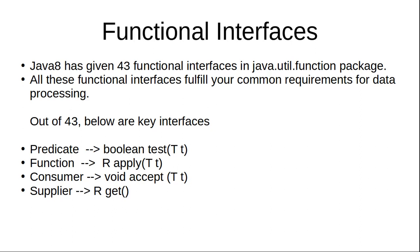Keeping all these requirements in mind, Java 8 came up with 43 predefined functional interfaces. With the help of these interfaces, along with streams and lambda expressions, you can fulfill all your day-to-day requirements. We will discuss streams and lambdas in subsequent videos. For now, remember the purpose of functional interfaces and how many are defined in java.util.function.